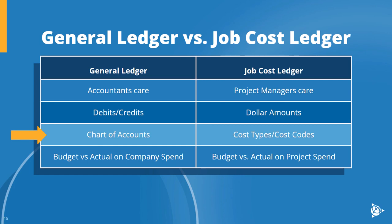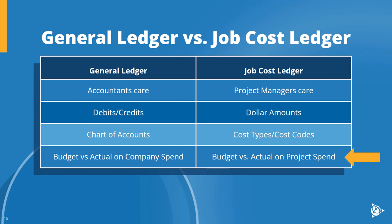When an accountant posts to a general ledger, they are posting to a chart of accounts — things like office supplies, rent, or accounts receivable. But project managers don't really care about the chart of accounts either; they care about cost types and cost codes. An accountant looks at the general ledger and compares numbers against a company-wide budget, tracking things like how much the company has spent on rent or materials so far in the year. The accountant is paying attention to spending across the business, not specific costs on a specific project. For project-specific costs, you'd look at the job cost ledger, where project managers compare a project's performance against its budget.